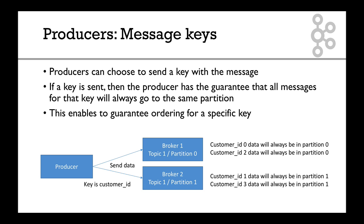So for example, in the bottom of your screen, you can see that the key is customer_id. So producer sends data, and with the data, it sends customer_id. Customer_id 0, for example, the data will always be in partition 0. Always. If the first one goes into partition 0, all the other customer_id 0s will go in the same partition.